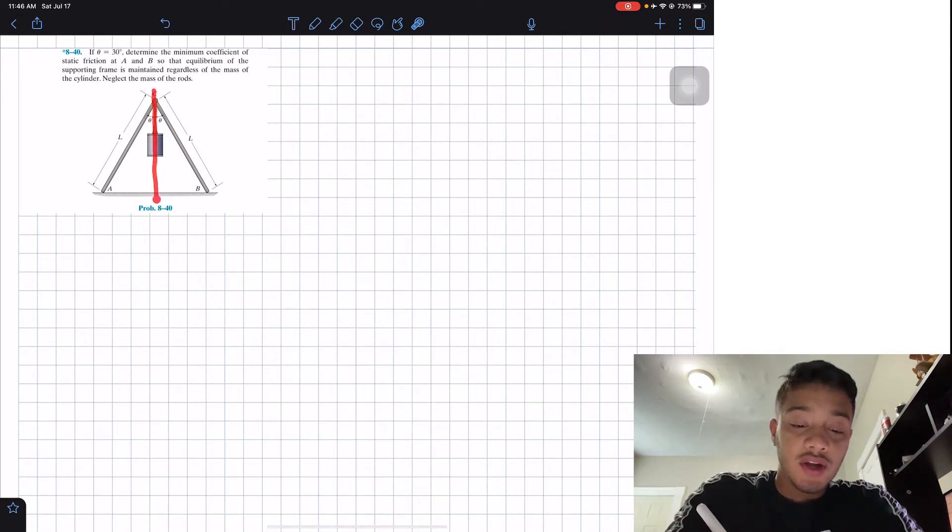And what we're going to say is, okay, due to symmetry, from this A side will be equal to my B side. So we can start working only on one side of my problem.